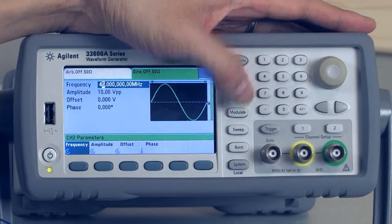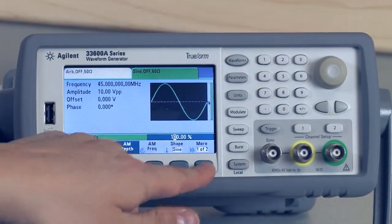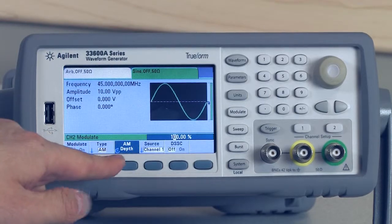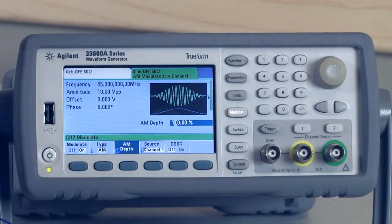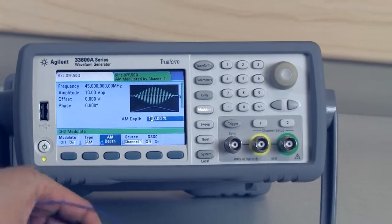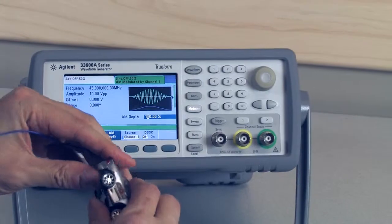To turn on modulation, I'm just going to press modulate and use the source to be channel one and turn modulation on. That's it.